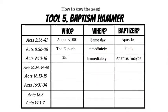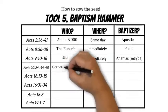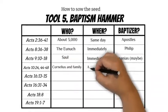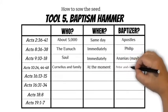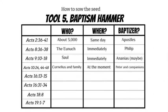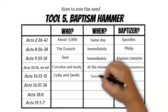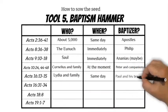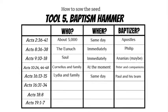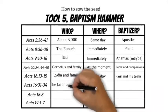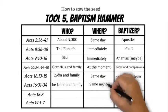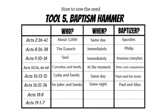Acts 10:24, 44–48: who was baptized — Cornelius and his house; when — at the moment; who baptized — Peter and his companions. Acts 16:13–15: who was baptized — Lydia and her family; when — that same day; who baptized — Paul and his team. Acts 16:31–35: who was baptized — the jailer and his house; when — that same night; who baptized — Paul and Silas.